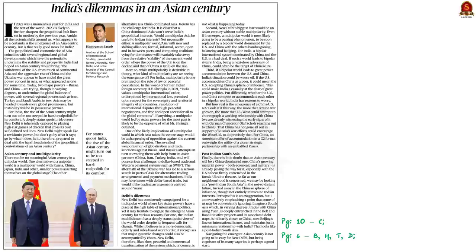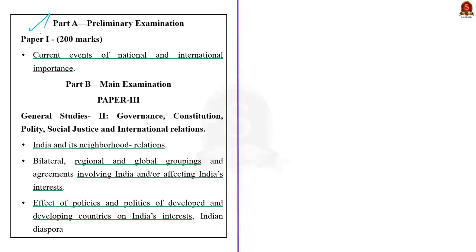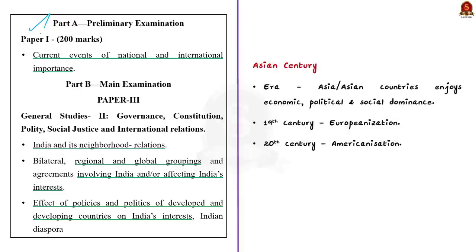Our next discussion is based on an editorial article that talks about the emergence of an Asia-centric century in this new year. The Asian century is actually an era in which Asia or Asian countries enjoy economic, political and social dominance. In the 19th century the world was Europeanized, in the 20th century it was Americanized, and now it is being Asianized — this is what is known as the Asian century. There should be some significance associated with Asia in the global arena. The Asian continent has 4.6 billion people, equal to 60% of the world's population, making Asia the largest and most populated continent with more human resources.